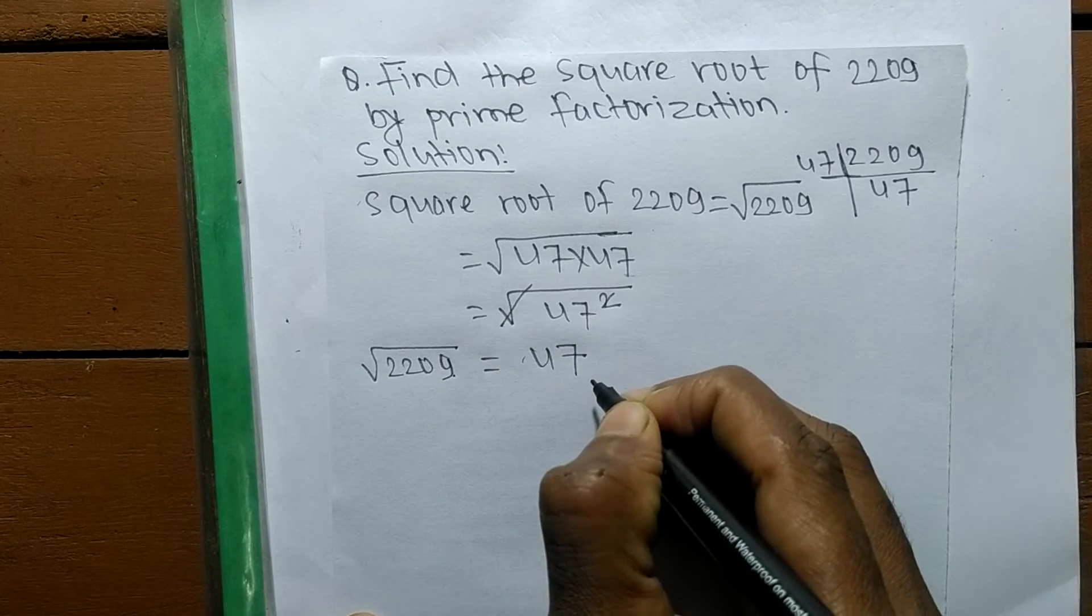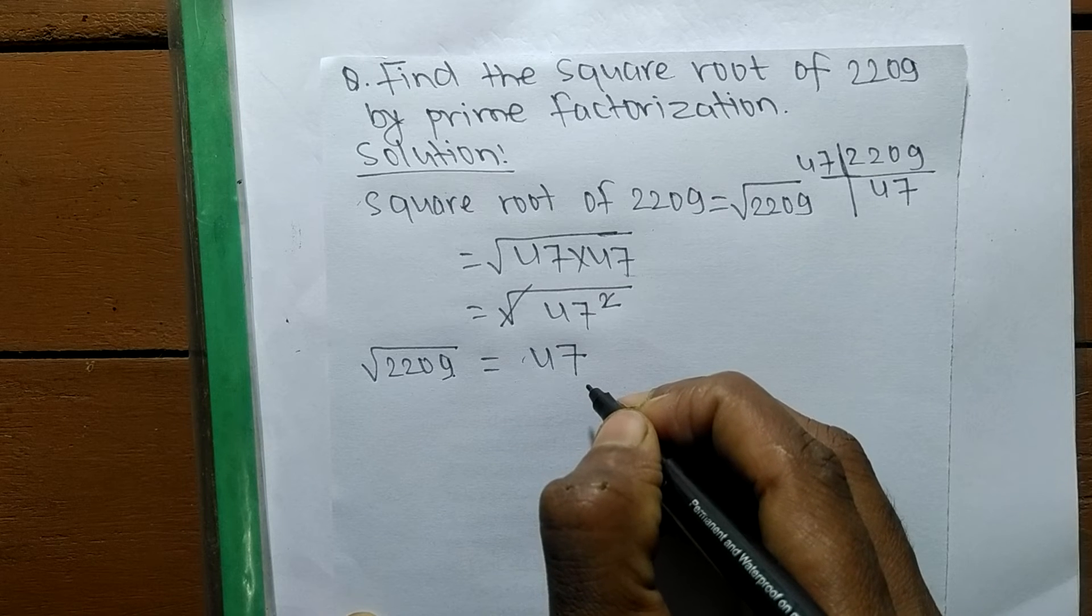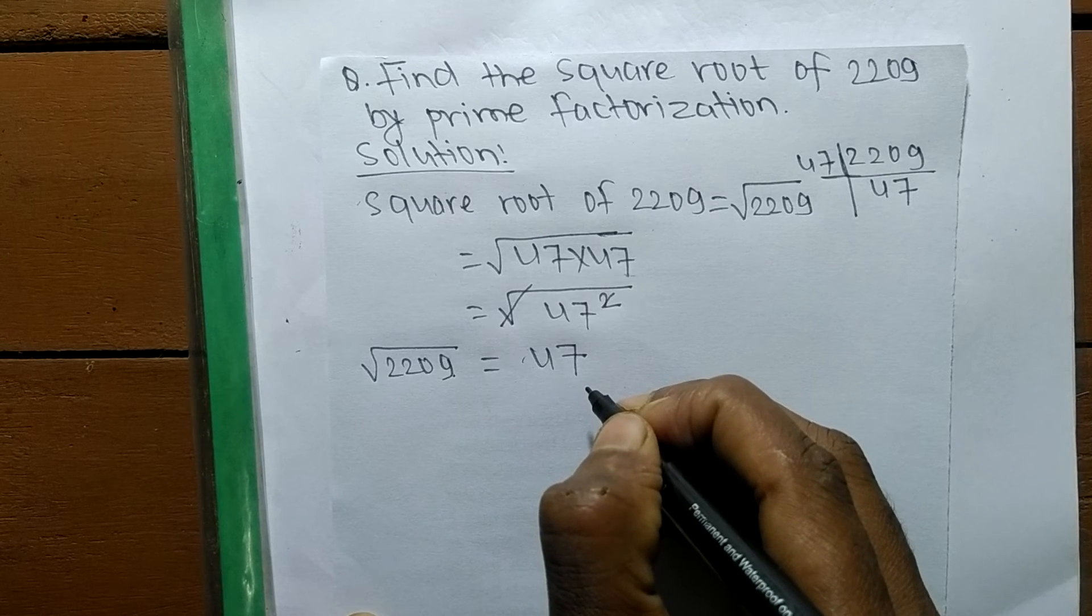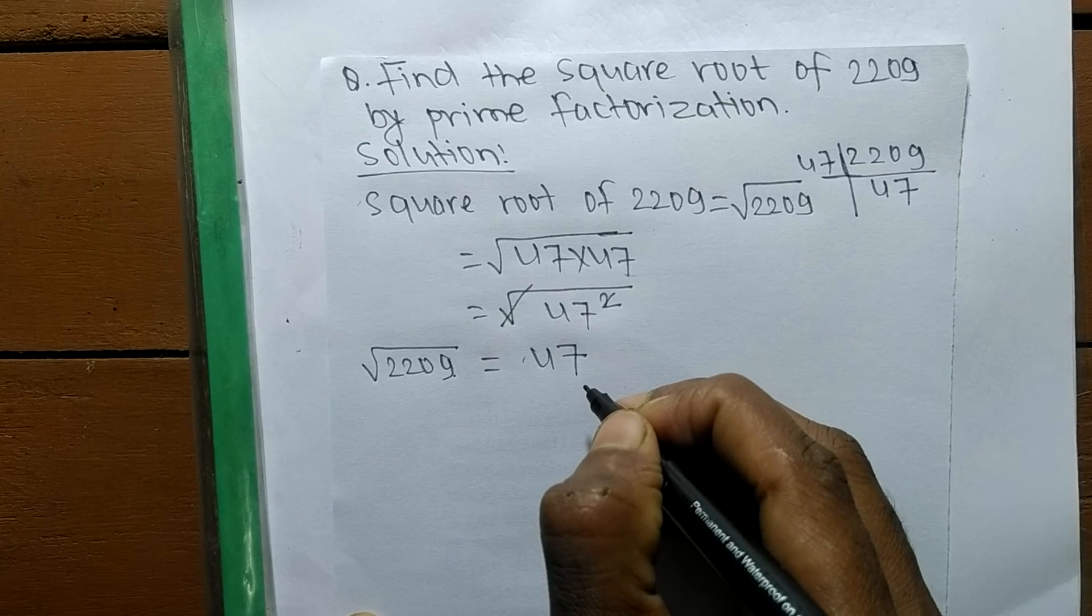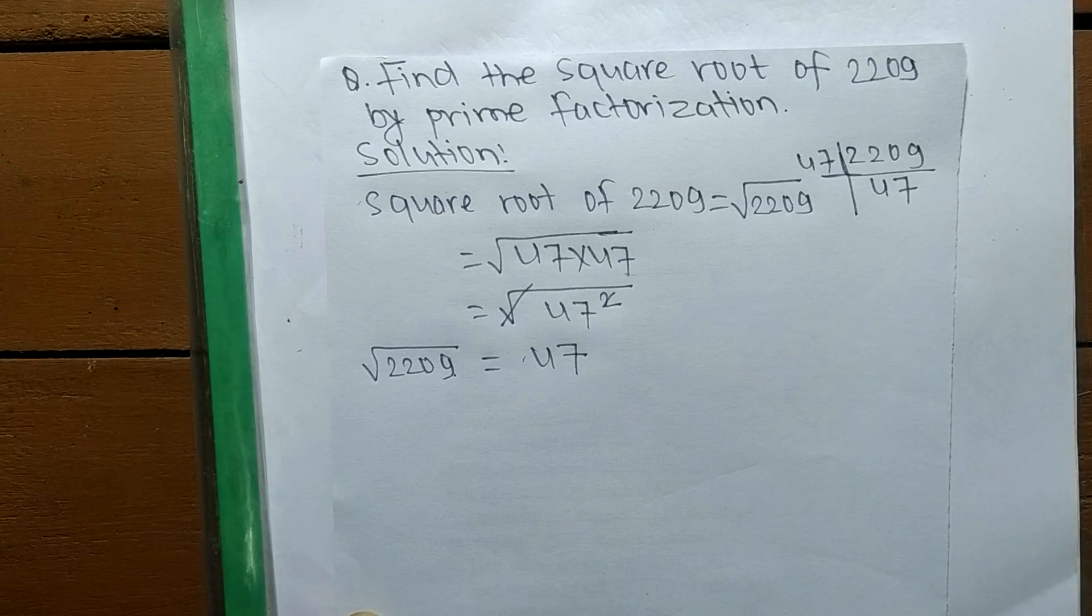The square root of 2209 is 47. So this much for today. If you have any question related to math and science, just comment your question below and we shall provide a video solution. Thank you.